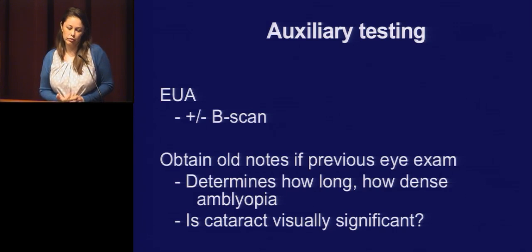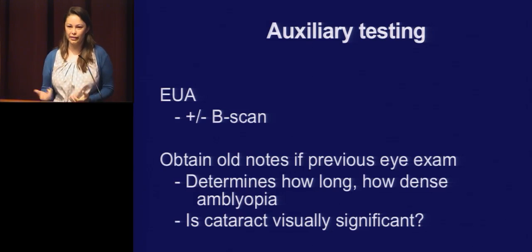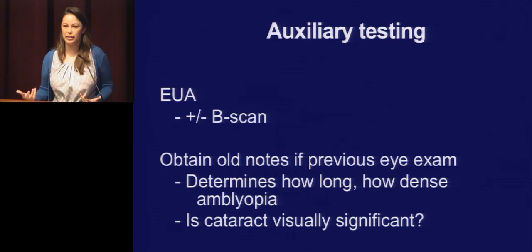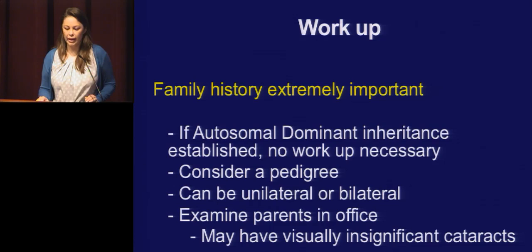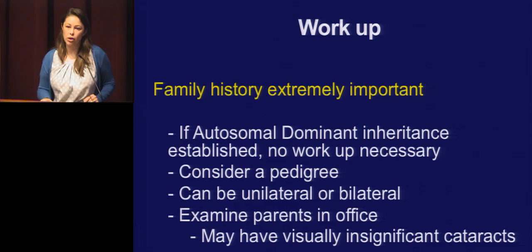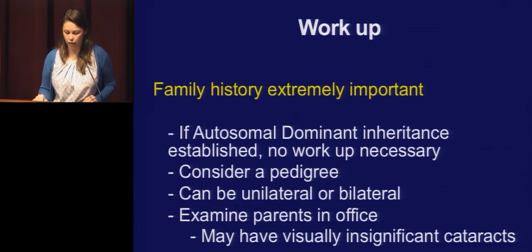Old notes are really important — they really change my conversation with the family. If a 15 or 16-year-old had 20/20 vision three years ago, I can say there's a good chance of improving their vision. If it's been there for a long time, you're having a different conversation and prepping the family. Family history is important — if you establish autosomal dominant inheritance, you don't do a workup. It can be unilateral or bilateral when inherited. A lot of times we'll examine the parents in the office, and they may not even know they have a small hint of a cataract.